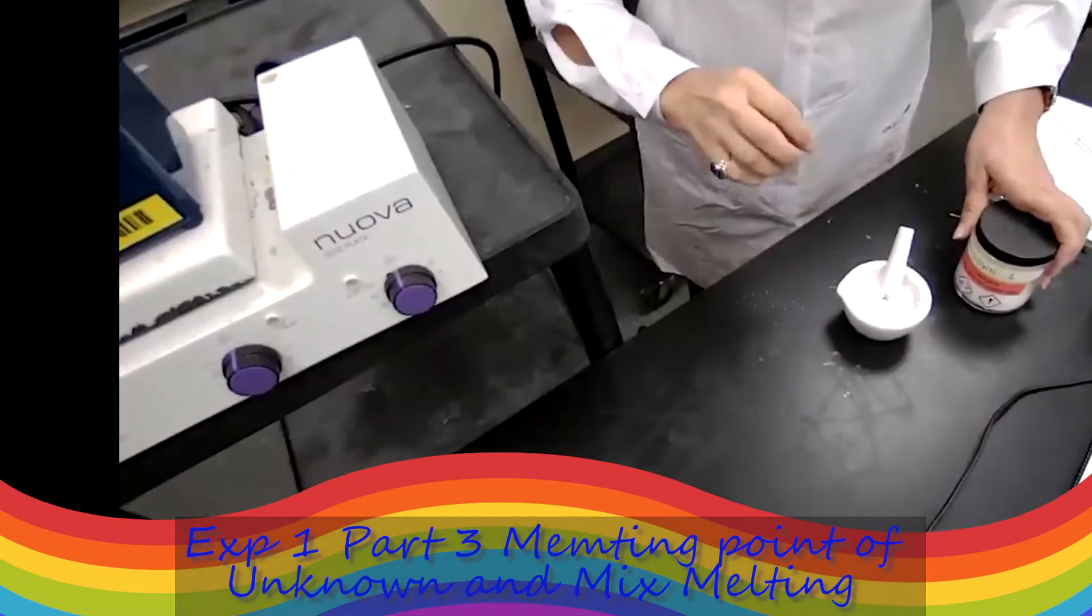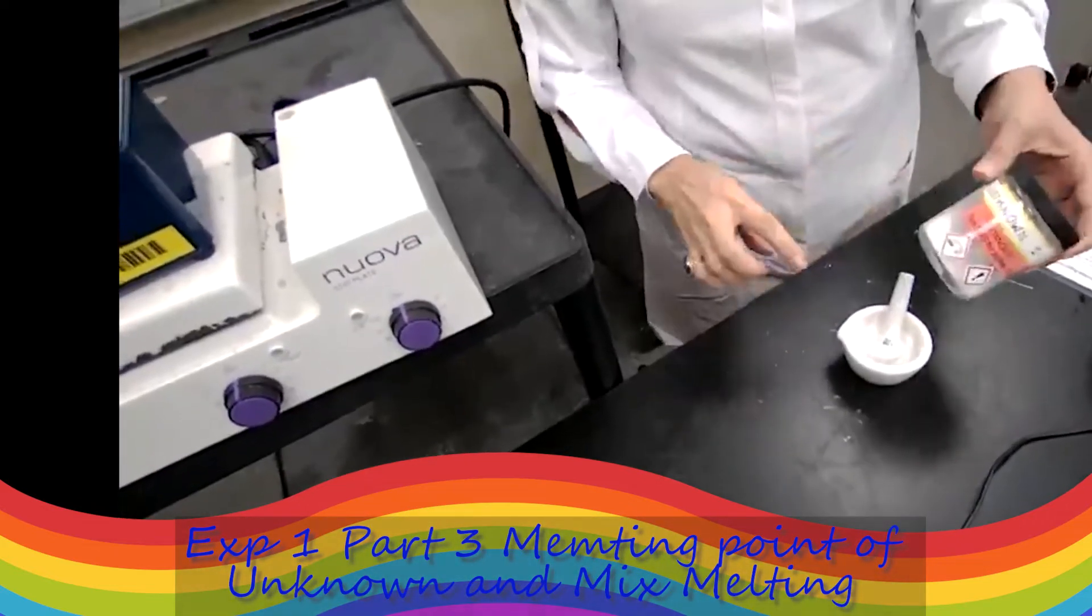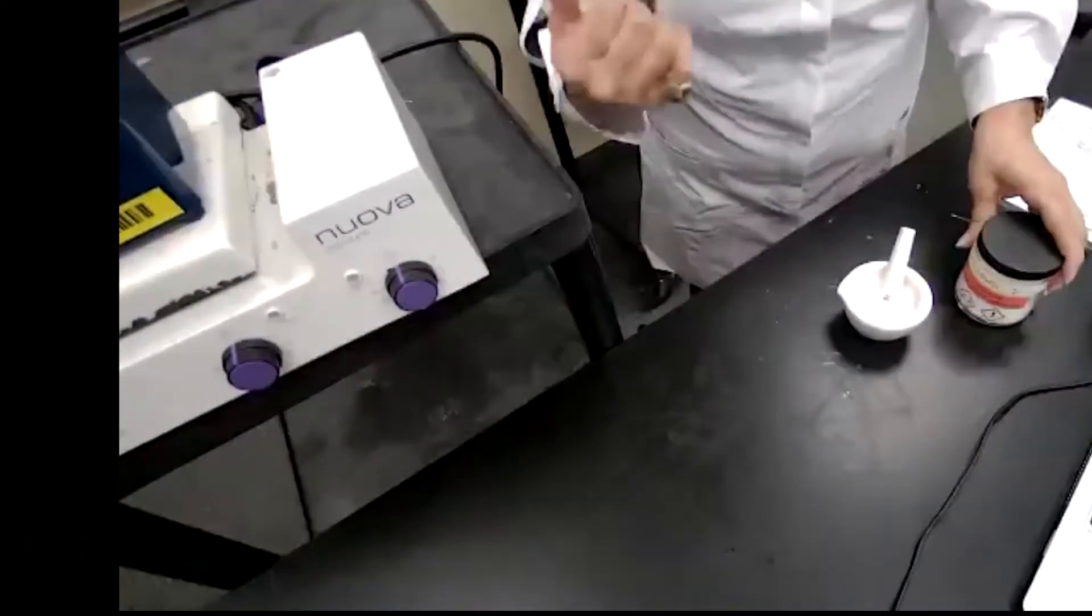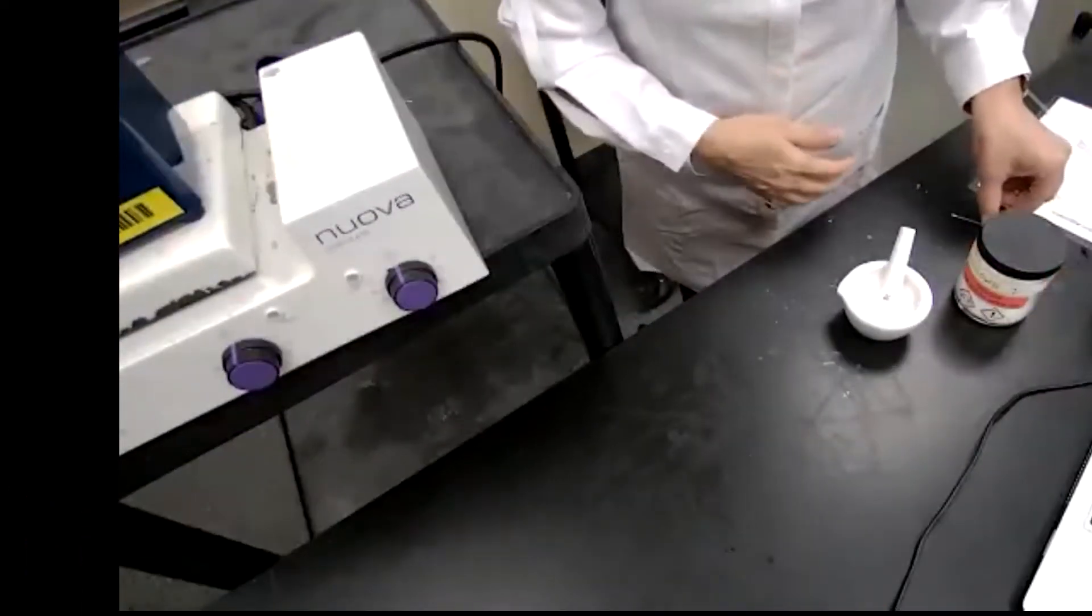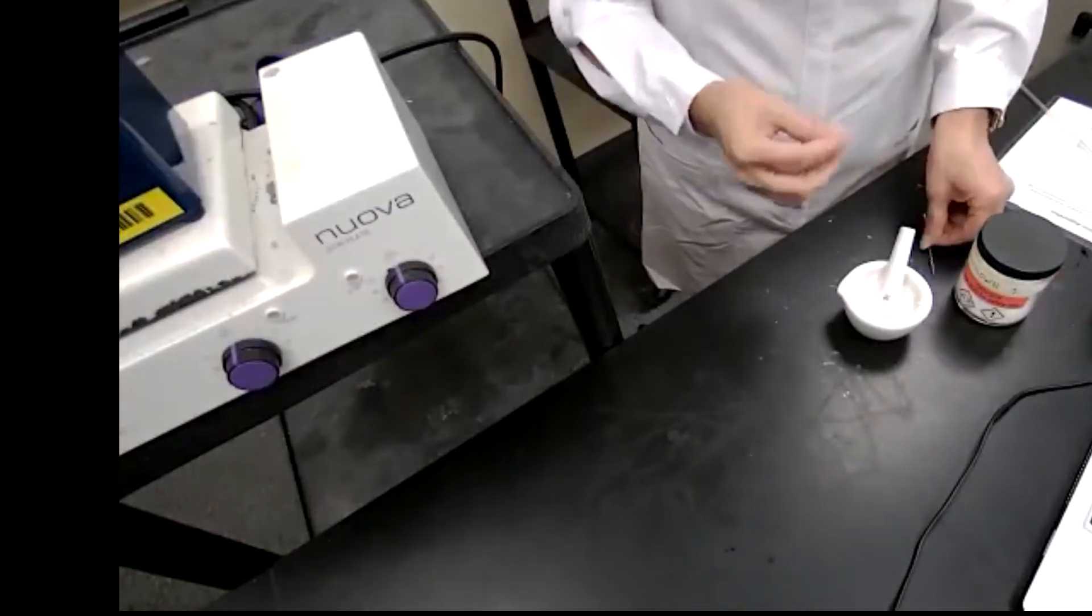For the next part of the experiment, we are going to measure the melting point for unknown. For the unknown, I don't know what should be the setting on the meltdown apparatus. So for that reason, I'm going to prepare two samples.